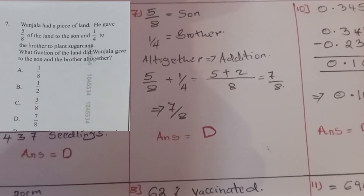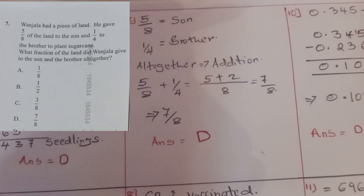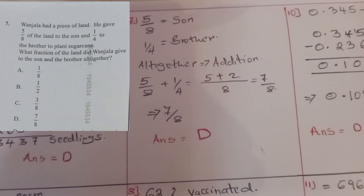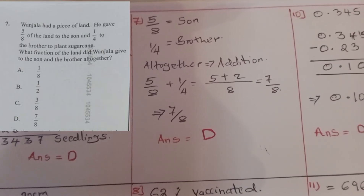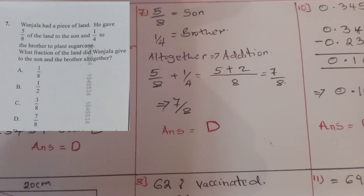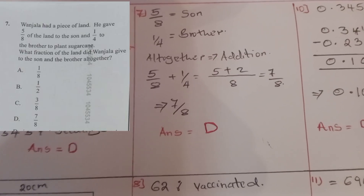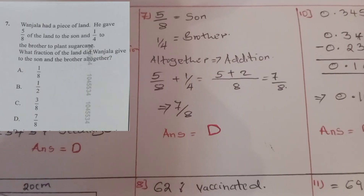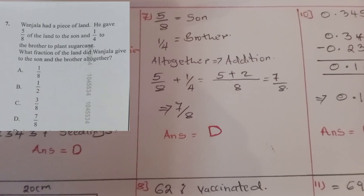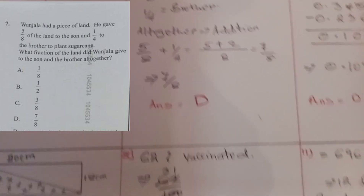Question seven: Jala had a piece of land. He gave five-eighths of the land to his son and a quarter to his brother to plant sugar cane. What fraction of the land did Jala give to the son and brother altogether? We add the two fractions. The LCM of eight and four is eight, so when you work it out you get seven over eight. The answer was D.